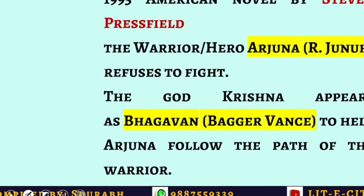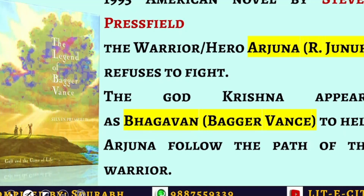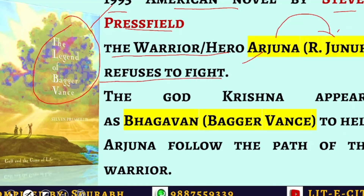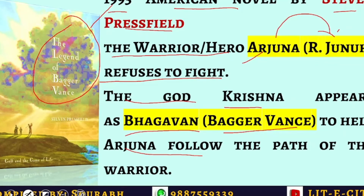A very good example of allusion is the novel The Legend of Bagger Vance (1995), written by Steven Pressfield. Looking at the characters: the warrior hero is named Arjunu — like Arjuna in the Mahabharata, he refuses to fight; and the god Krishna appears as Bhagwan Bagger Vance to help Arjuna follow the path of the warrior. It is a direct allusion — but for allusion to work, it is necessary that the reader also shares the context.